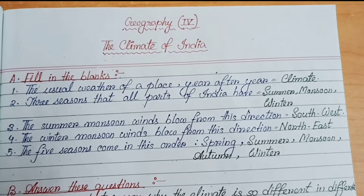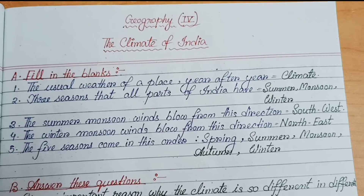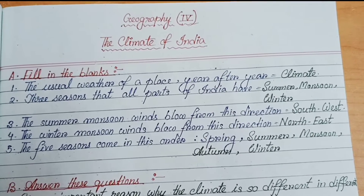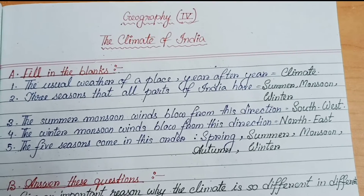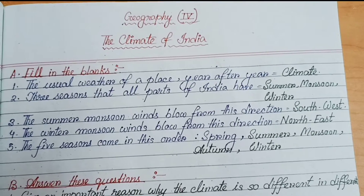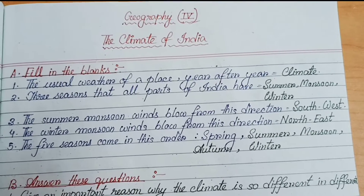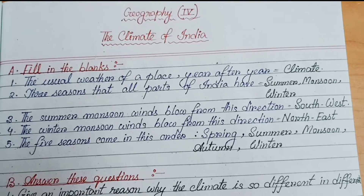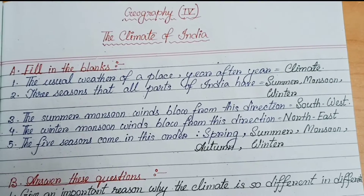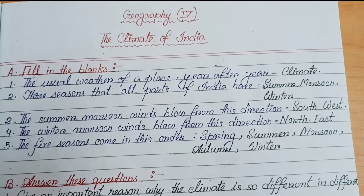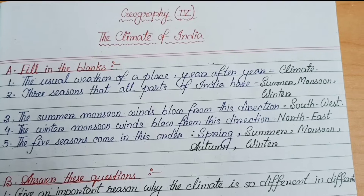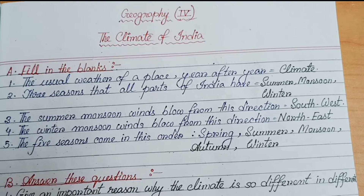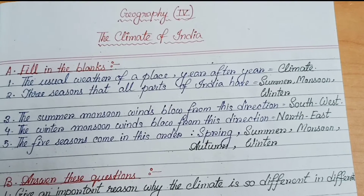Number A, Fill in the blanks. Number 1: the usual weather of a place year after year — climate. Number 2: three seasons that all parts of India have — summer, monsoon, winter.